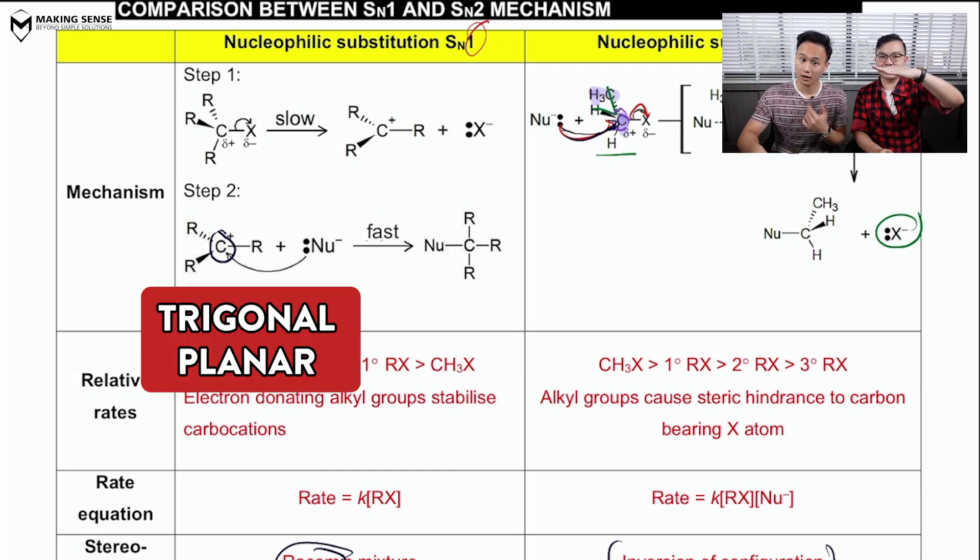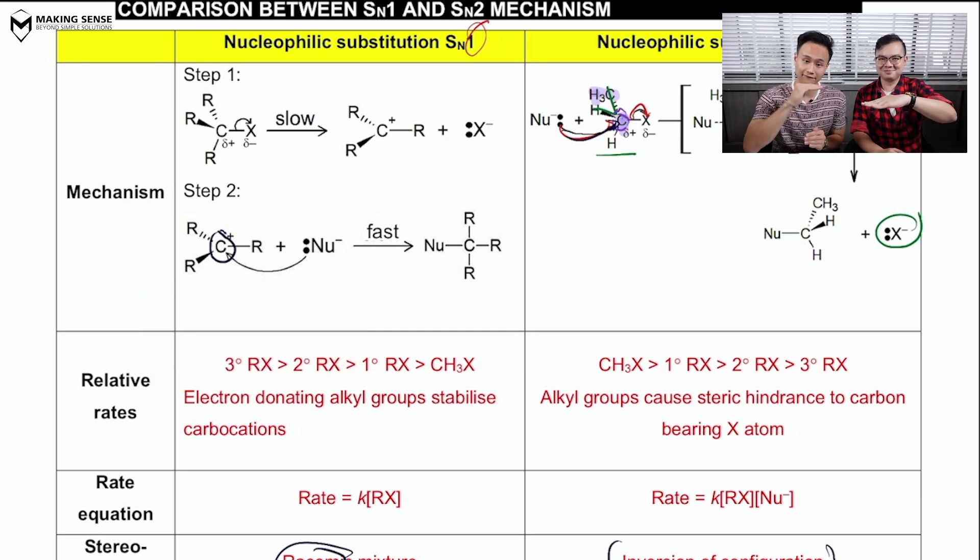Okay. It's completely flat. Now, which means a nucleophile can attack from the top or from the bottom. Now, there's an equal percent, equal chance of doing it, which means if the product is chiral, 50% of the product will rotate plane polarized light clockwise.